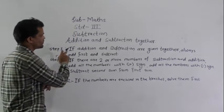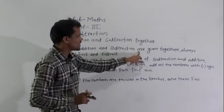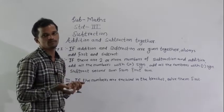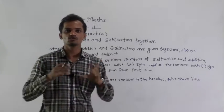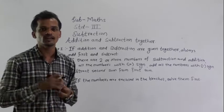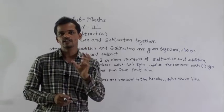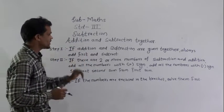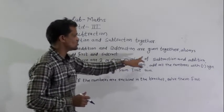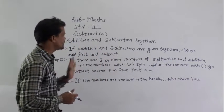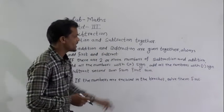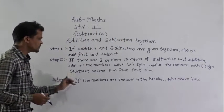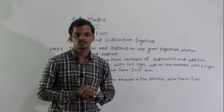See step 1: if addition and subtraction are given together, always add first and then subtract. If both operations are given in one example, always do addition first and then subtraction. Step 2: if there are 2 or more numbers, add all the numbers with a plus sign, add all the numbers with a minus sign, and then subtract the second sum from the first sum.